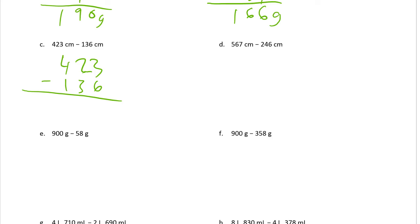423 minus 136. We don't have enough ones — 3 minus 6 — so we have to unbundle a ten. We'll have 11 tens left. 10 more ones plus the 3 we already have is 13 ones. 13 minus 6 is 7. 1 ten minus 3 tens — we don't have enough, so we break up a hundred. 10 plus that 1 gives us 11 tens. 11 minus 3 is 8, and 3 minus 1 is 2. That's 2 hundreds, 8 tens, and 7 ones.